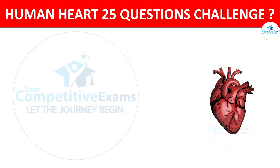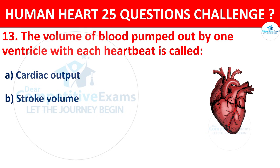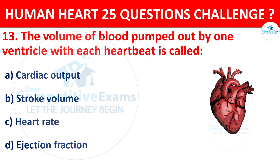Question number 13. The volume of blood pumped out by one ventricle with each heartbeat is called? Options: Cardiac output, Stroke volume, Heart rate, or Ejection fraction. Correct answer is B, that is Stroke volume.